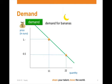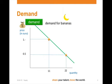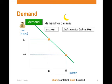On your screen you will find the demand curve, downward sloping as explained in the previous videos. If we look at the math, it says y equals ax plus b. In economics, quantity demanded equals a times p, p being the price, plus b.